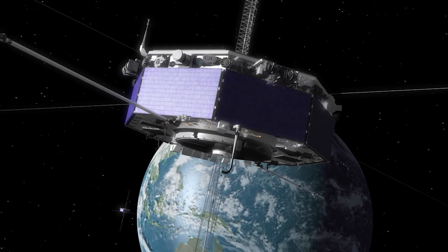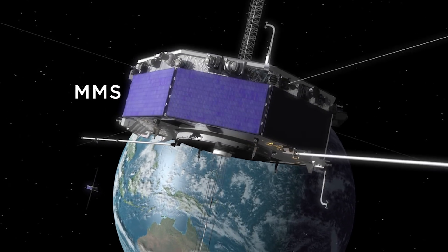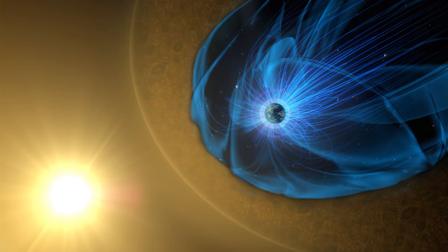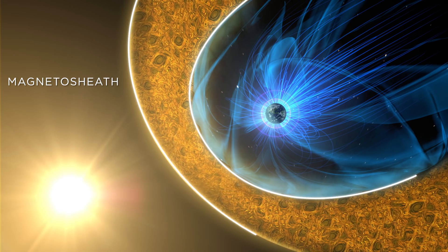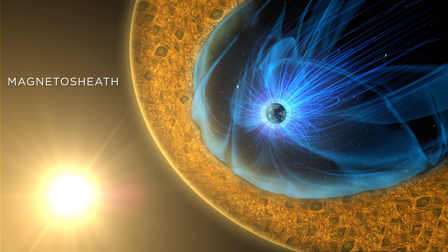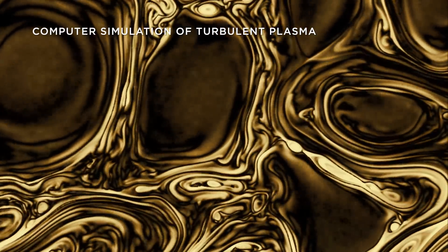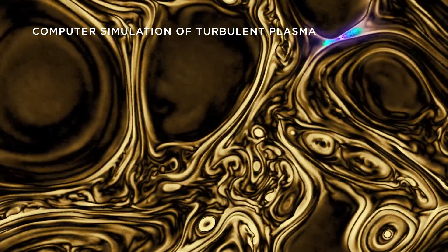Now in a new study, MMS caught the process occurring in a new region. For the first time, magnetic reconnection was detected in the turbulent magnetosheath, the boundary between the magnetosphere and solar wind. This region is made up of turbulent plasma. It's one of the most chaotic regions in near-Earth space.